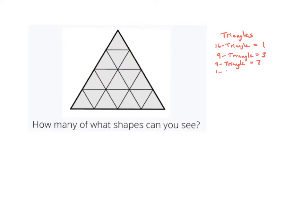Of course we know there is a one-triangle, and we already counted sixteen of them. So altogether we have one plus three plus seven plus sixteen, which gives us twenty-seven triangles.